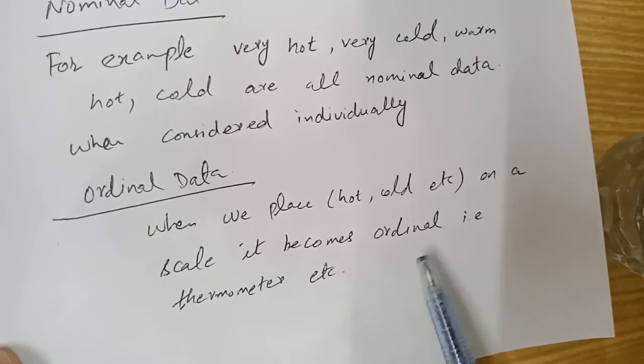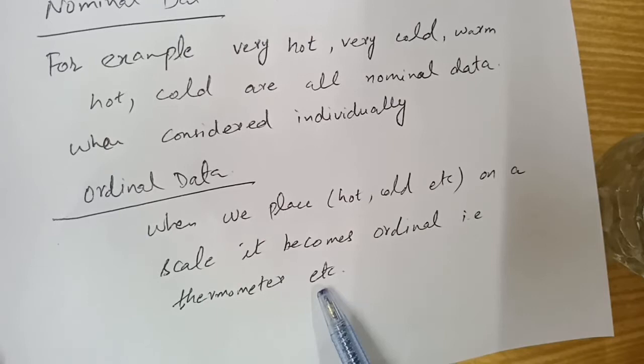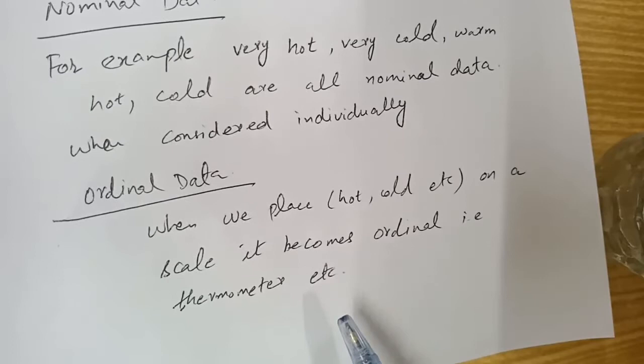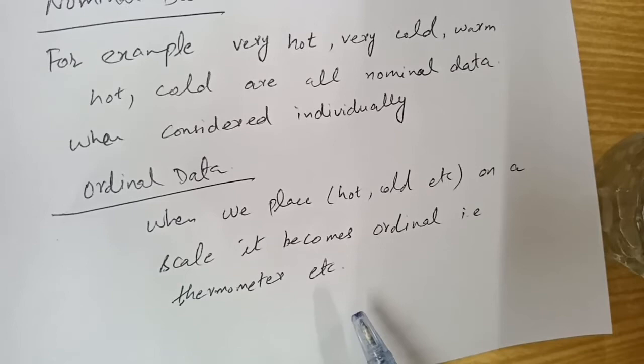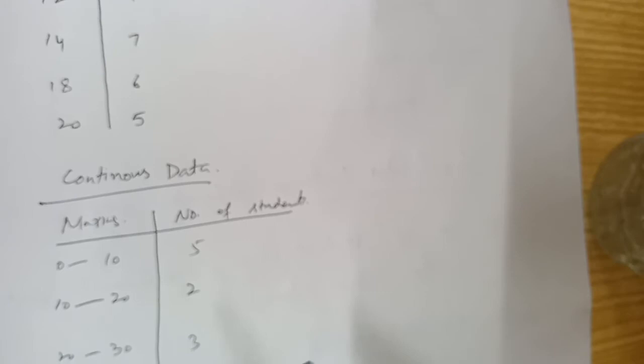But when we place hot, cold, and so on on a scale, it becomes ordinal data — just like a thermometer or a galvanometer. Now we make a scale, and on this scale — for example weather — this is ordinal data because we care about the order. This was the example of ordinal data.